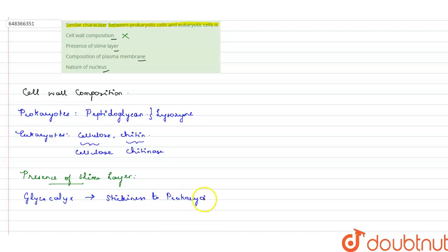But this is not found in eukaryotes. So presence of slime layer is not the right answer.